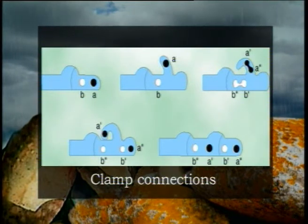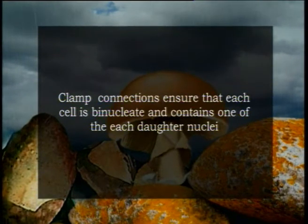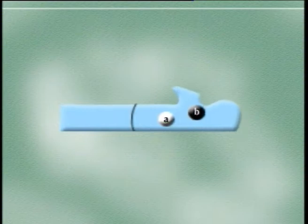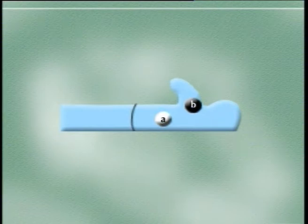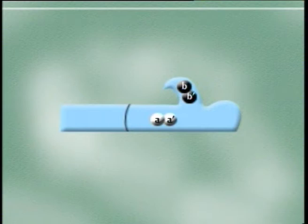Out of these four nuclei, one from each strain moves into the daughter cell by the formation of a clamp connection. The function of clamp connections is to ensure that each cell is binucleate and contains one of each daughter nuclei. When the dikaryotic cell begins to divide, a pouch-like lateral outgrowth is formed between the two nuclei A and B. This outgrowth, known as the clamp connection, turns backward in the form of a hook. Nucleus B then moves into the clamp pocket, and both nuclei divide synchronously, giving four nuclei: A, A', B, and B'.